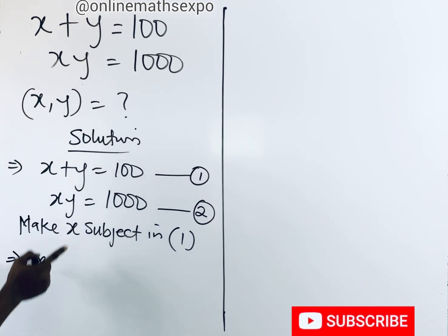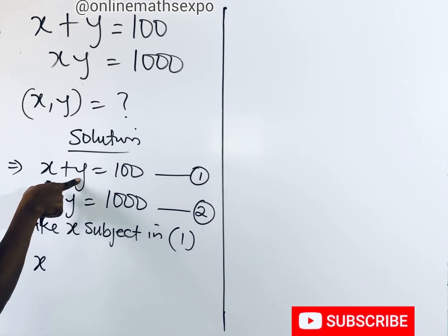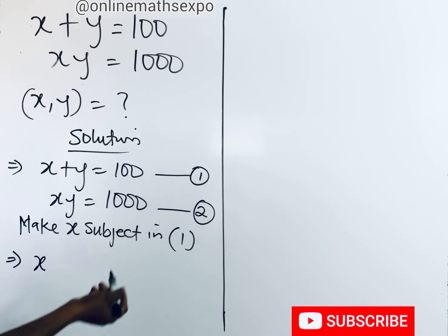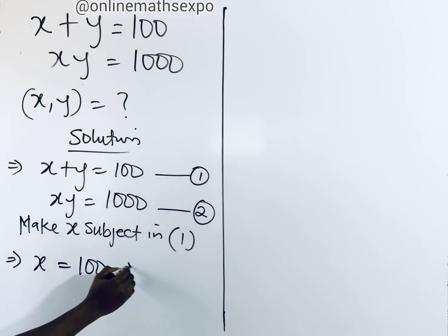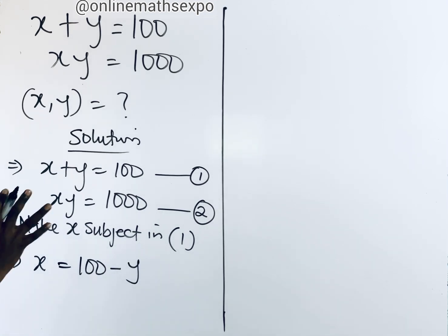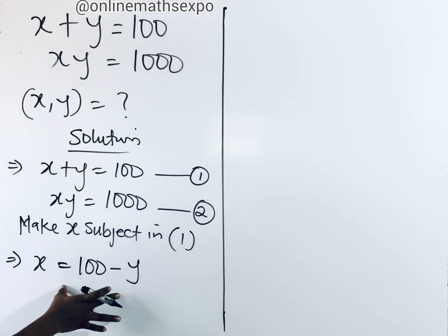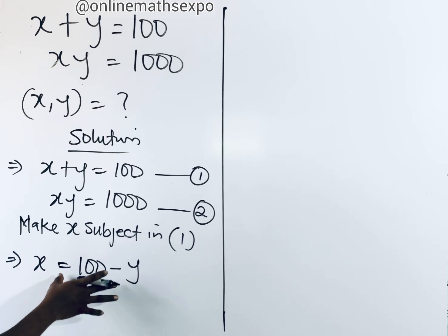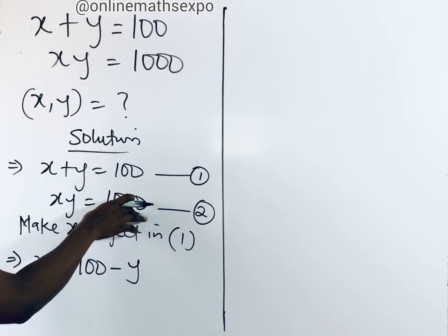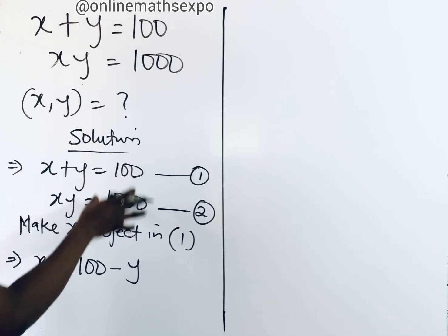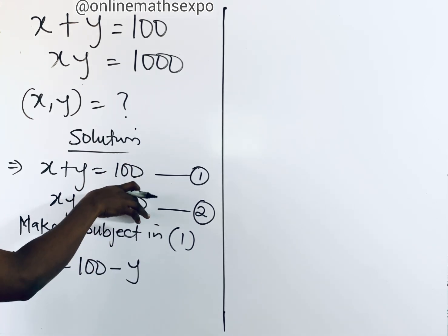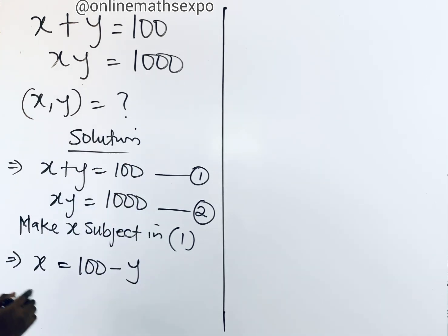To make x the subject in equation one, we want to remove y. Since it's positive, we subtract it from both sides, giving us x equals 100 minus y. Now we are going to use this expression for x and plug it into the second equation.